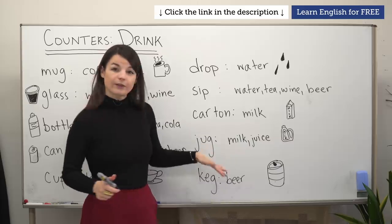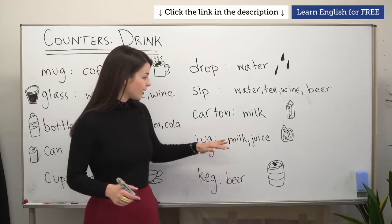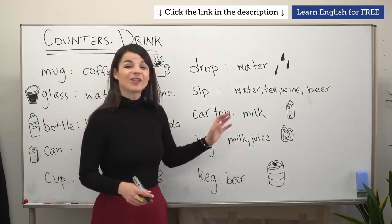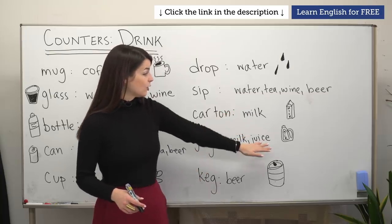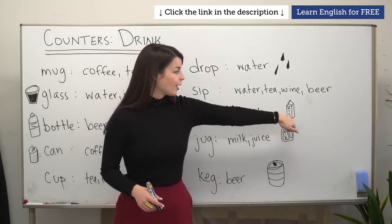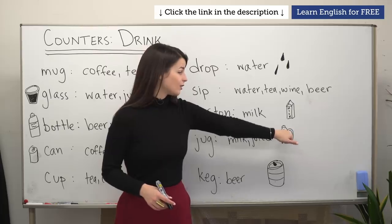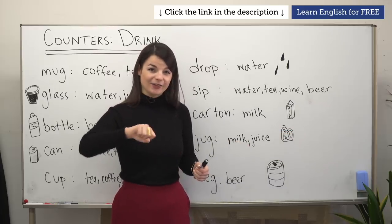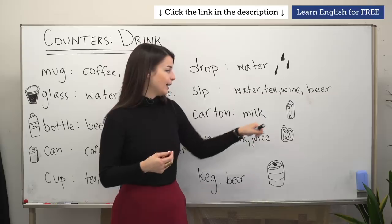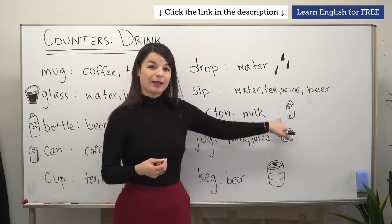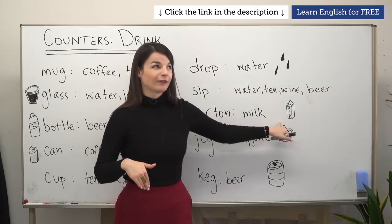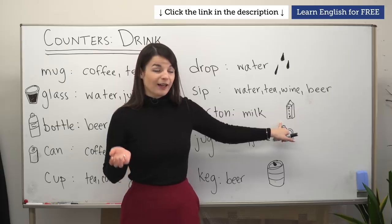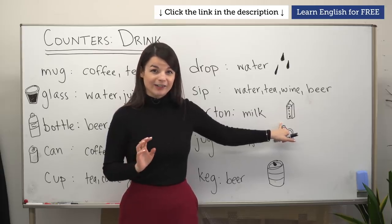Another one that drinks are commonly sold in is jug. We can say a jug of milk, a jug of juice. The difference between a carton and a jug is that a jug is usually made of plastic and has a handle on the side. A carton is usually made of cardboard or some kind of paper material and does not have a handle on it.